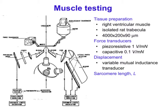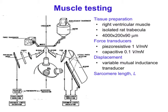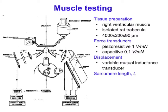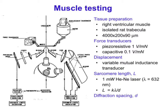Measuring sarcomere length is easy in skeletal muscle—you can shine a laser pointer through a frog skeletal muscle and see a diffraction pattern. You can't do that as easily in cardiac muscle because cells aren't as perfectly parallel and preparations are more non-uniform and thicker. However, with nice trabeculi that are ordered and thin enough, you can measure sarcomeres by shining a laser beam through them, though the pattern is not as clean as from skeletal muscle.